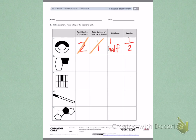Continue this process for B, C, and D, and E until you have filled in the total number of equal parts, the total number of equal parts shaded, unit form, and the fraction form for each picture.